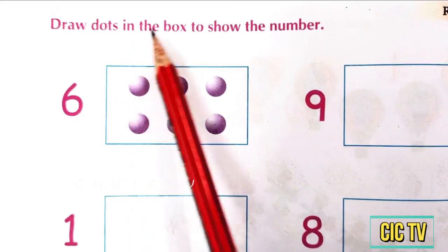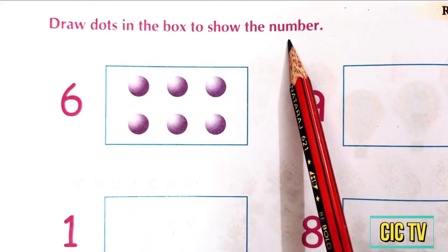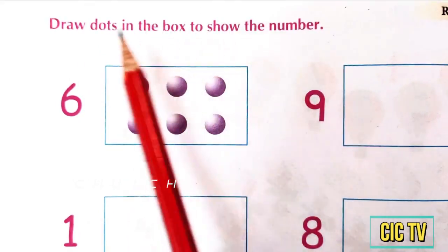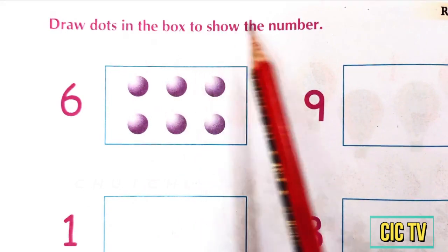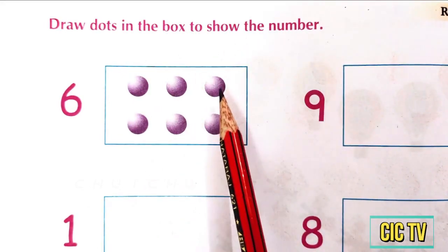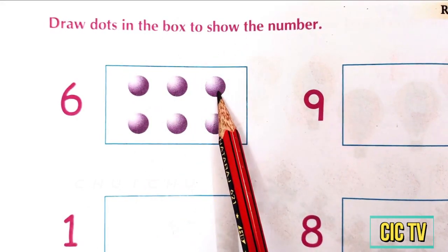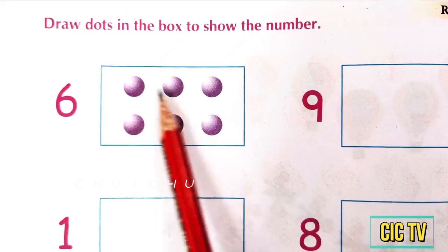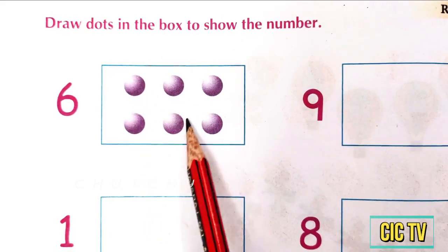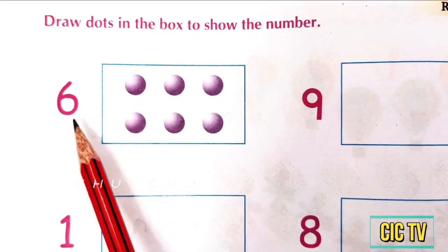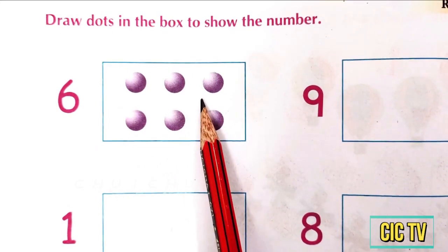Draw dots in the box to show the number. How many dots are here? 1, 2, 3, 4, 5, 6. 6 dots are here.